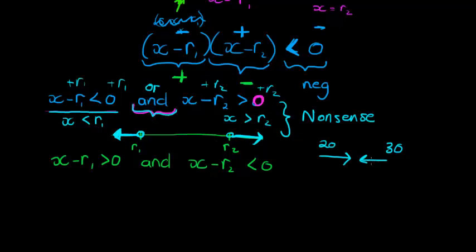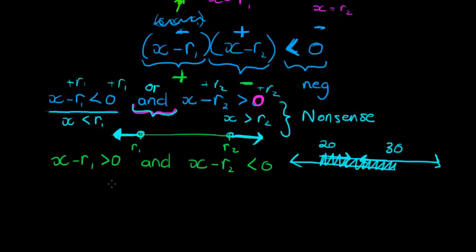I can say I'm older than 20 and younger than 30 because there's an intersection between those two descriptions. But I can't go in two opposite directions and use the word 'and' when there's no intersection. So the first case is nonsense — it's not a solution.